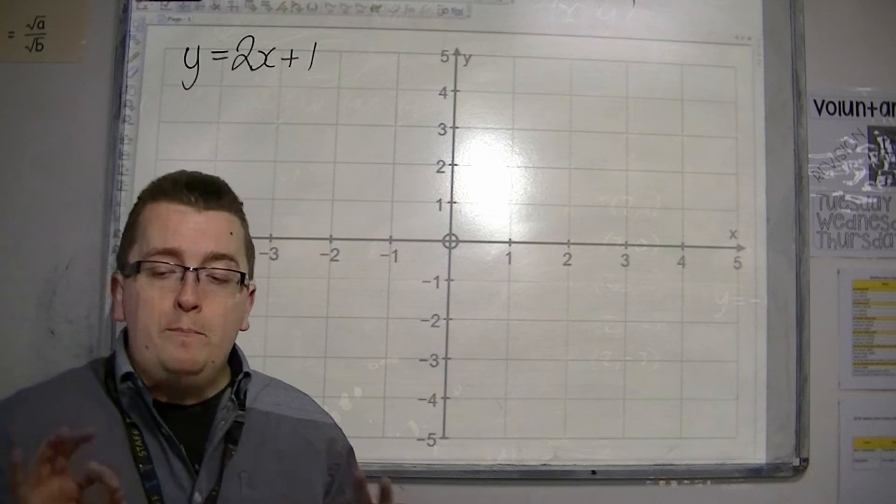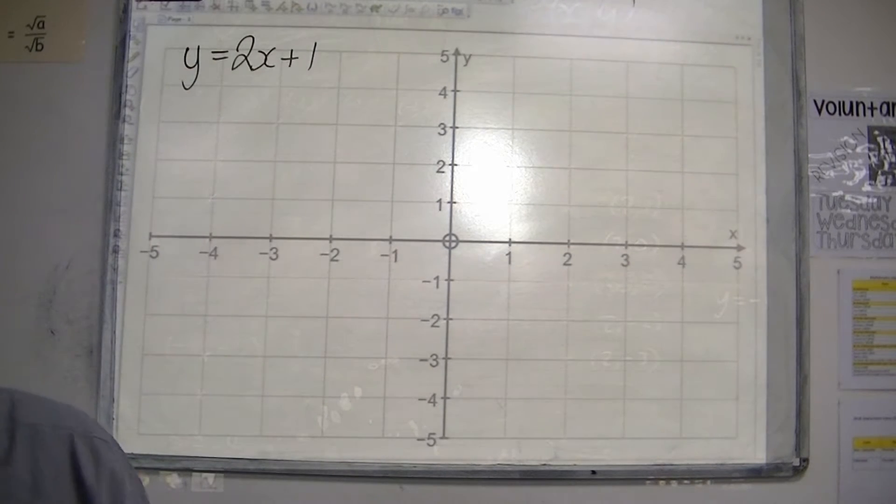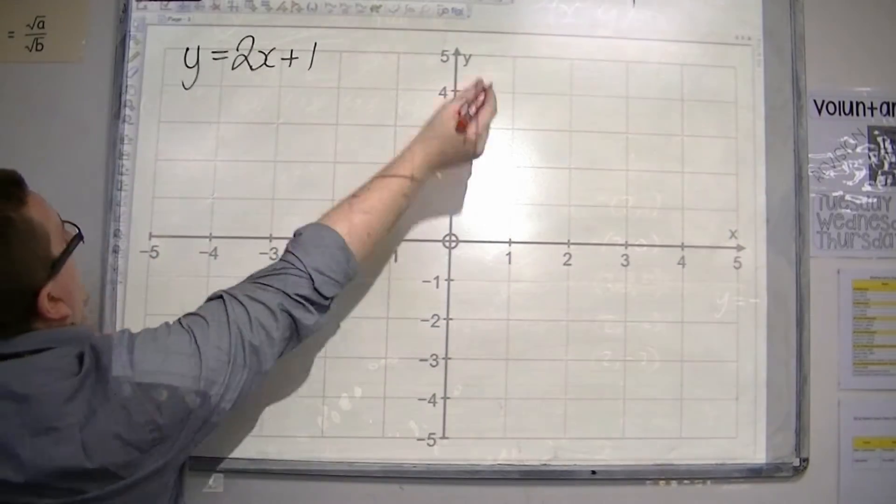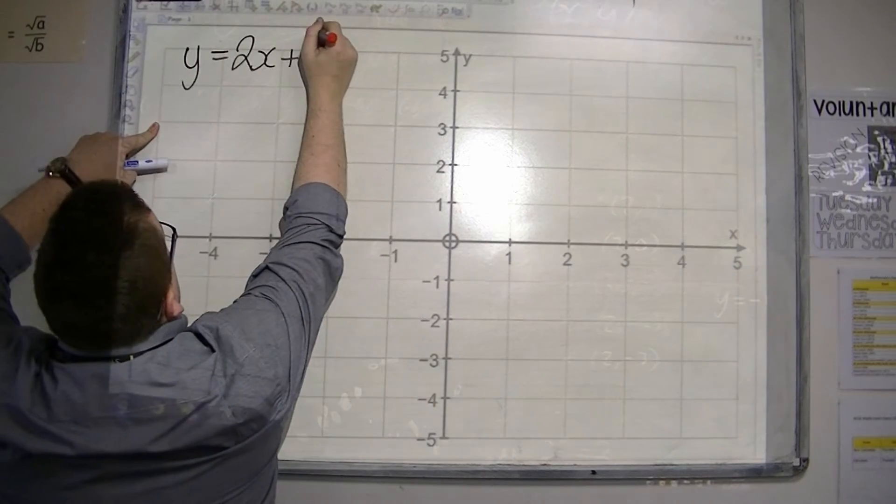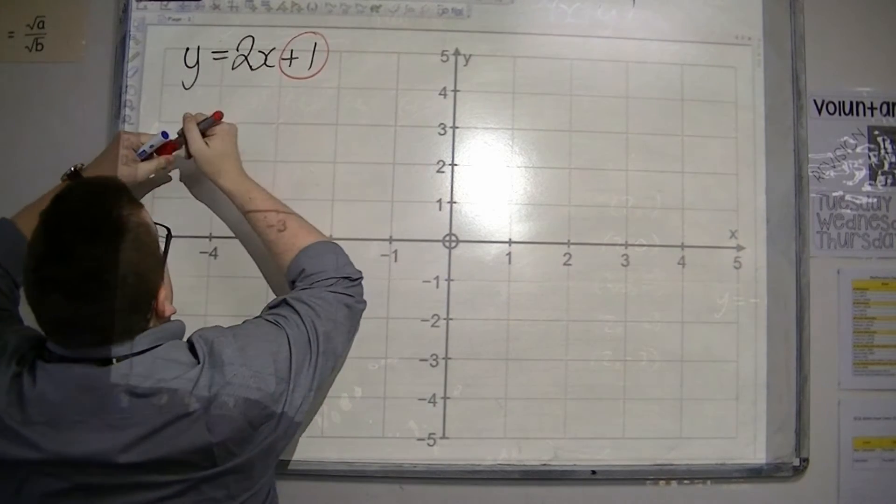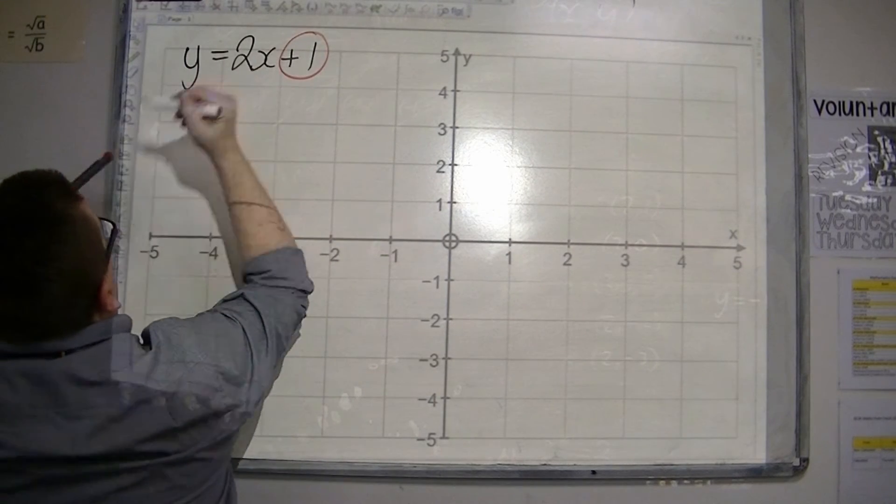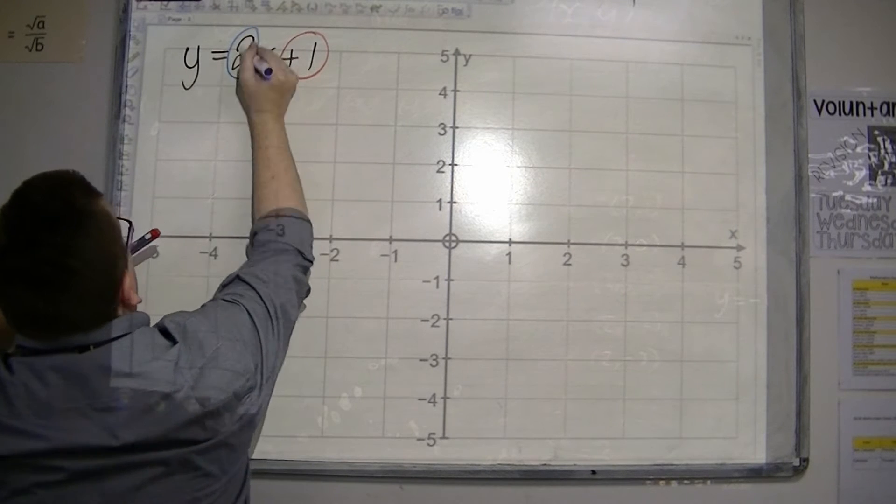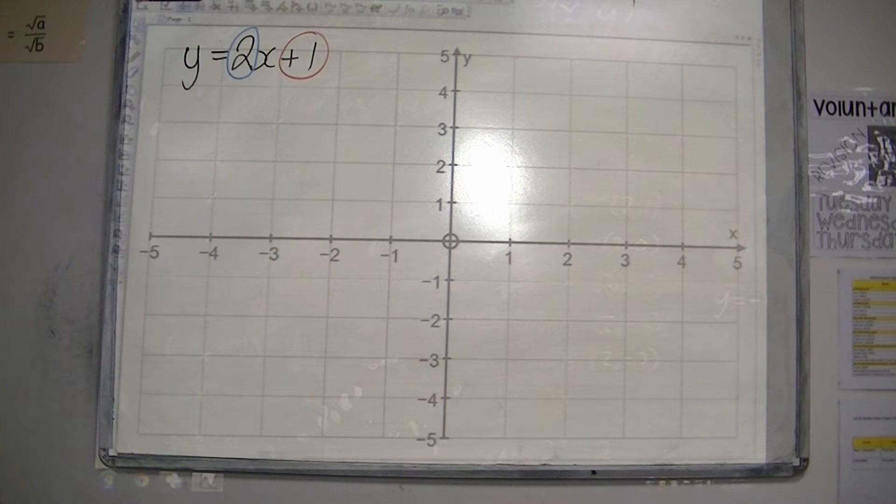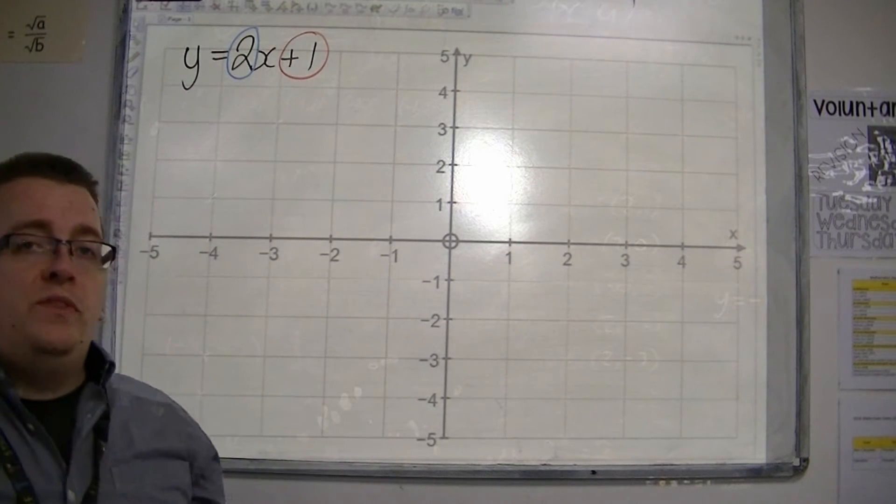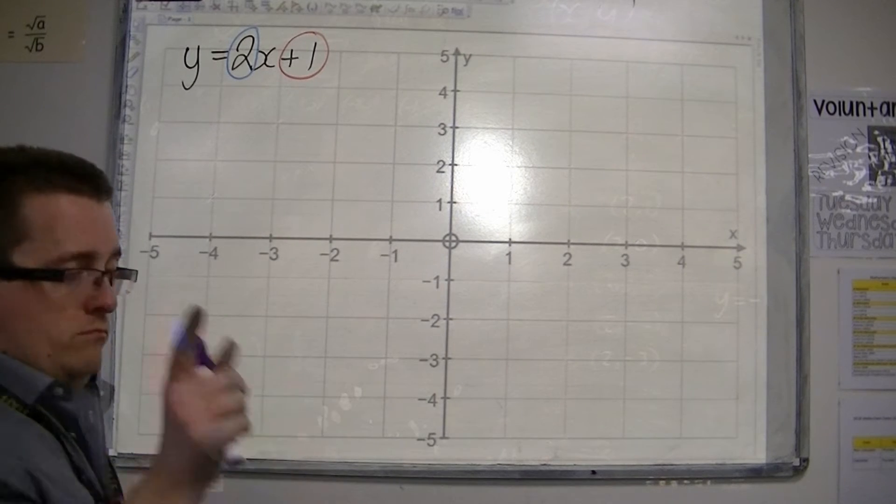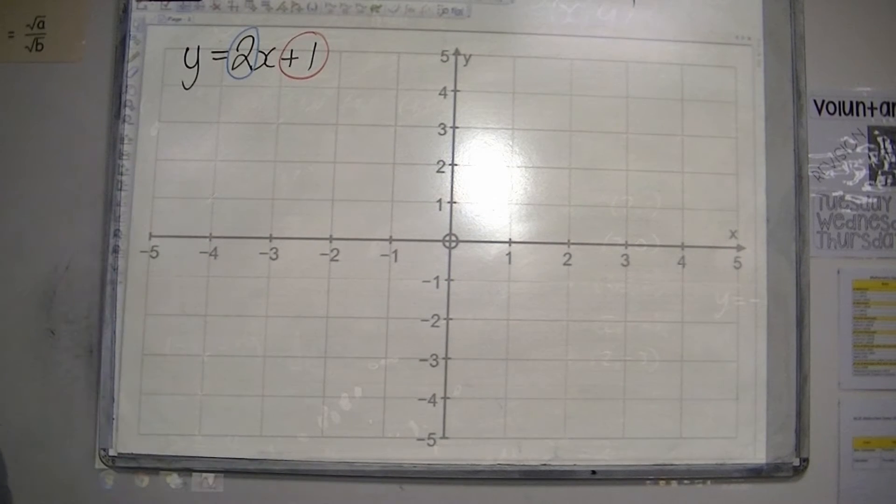There are two important bits of information. The two important bits of information that are in the equation are the plus 1 and the number 2. So let's deal with the number 2 first. Now, scratch that, let's deal with the plus 1 first.